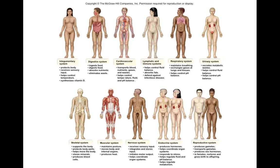This diagram shows the different organ systems in the body and their associated medical specialties. Integumentary system: dermatology. Digestive system: gastroenterologist or GI doctor. Cardiovascular system: cardiologist. Lymphatic or immune system: immunologist, with the emerging specialty of infectious disease dealing with pathogenic immune responses, distinct from autoimmune responses like lupus or arthritis. Respiratory system: pulmonologist.